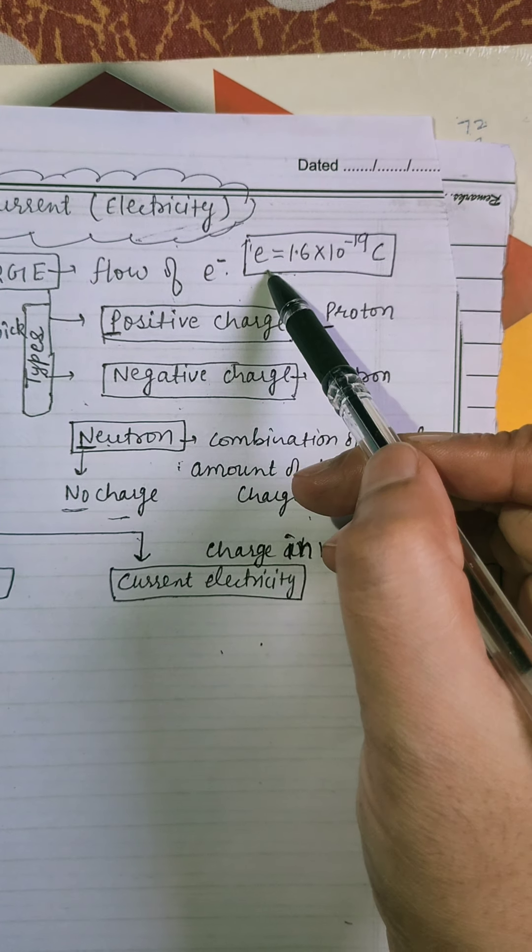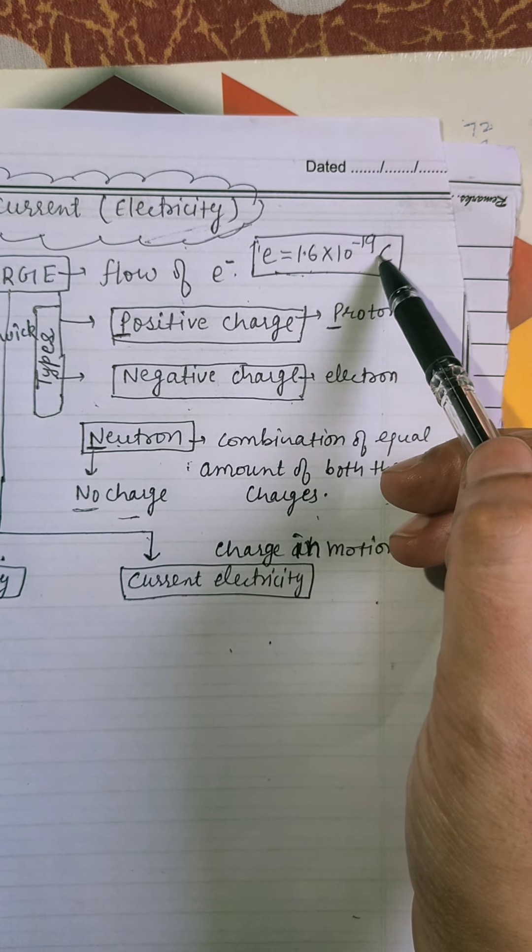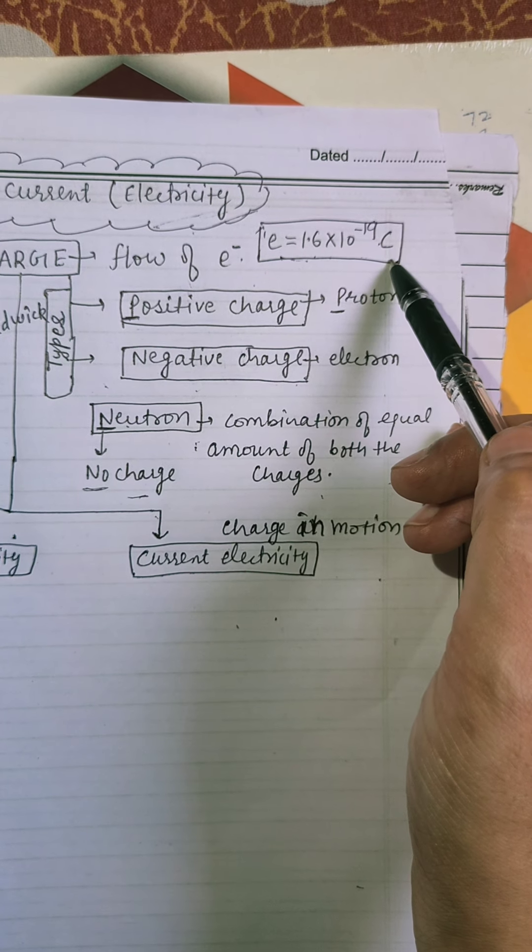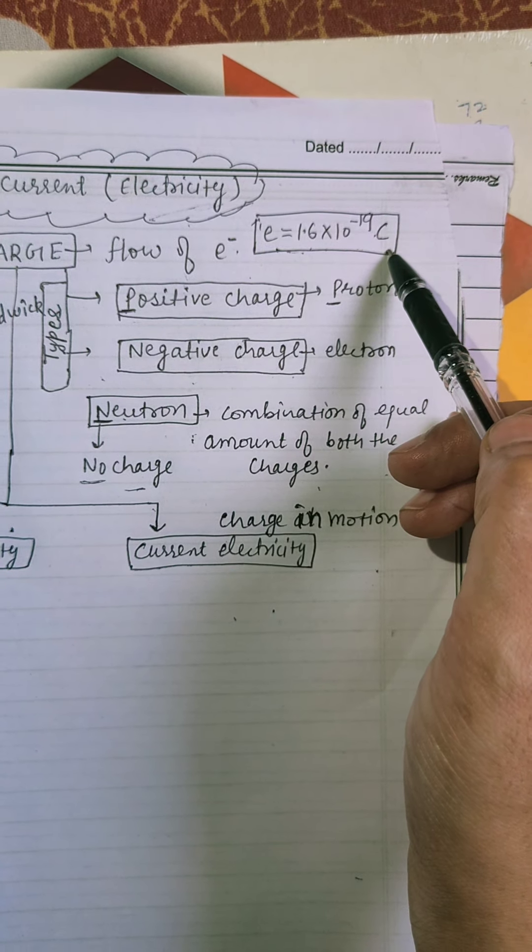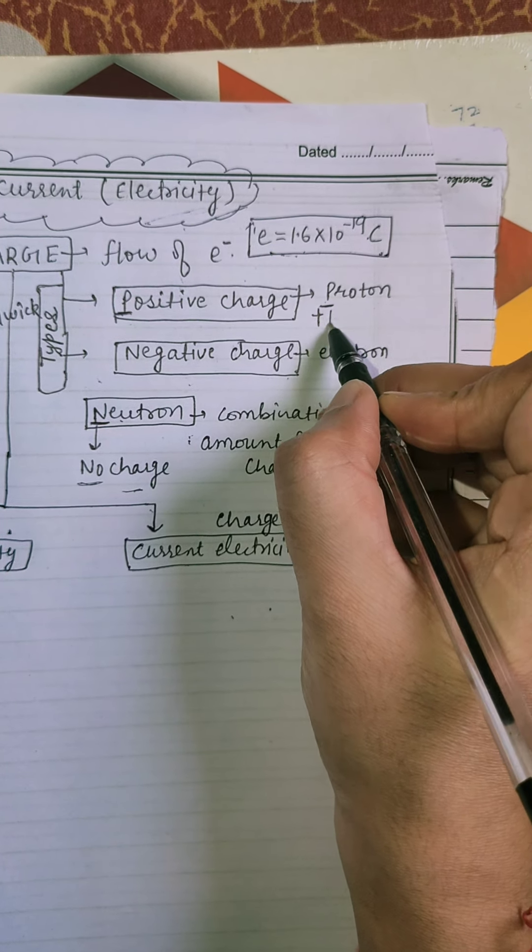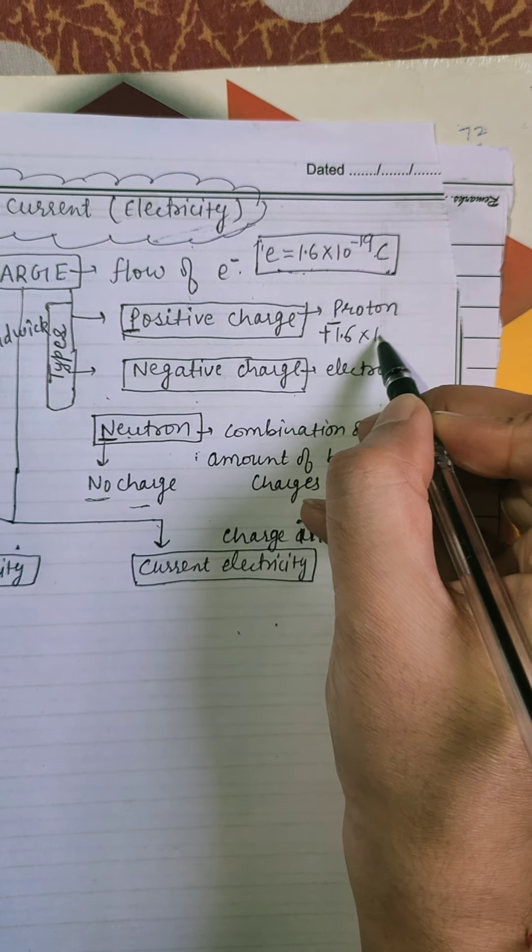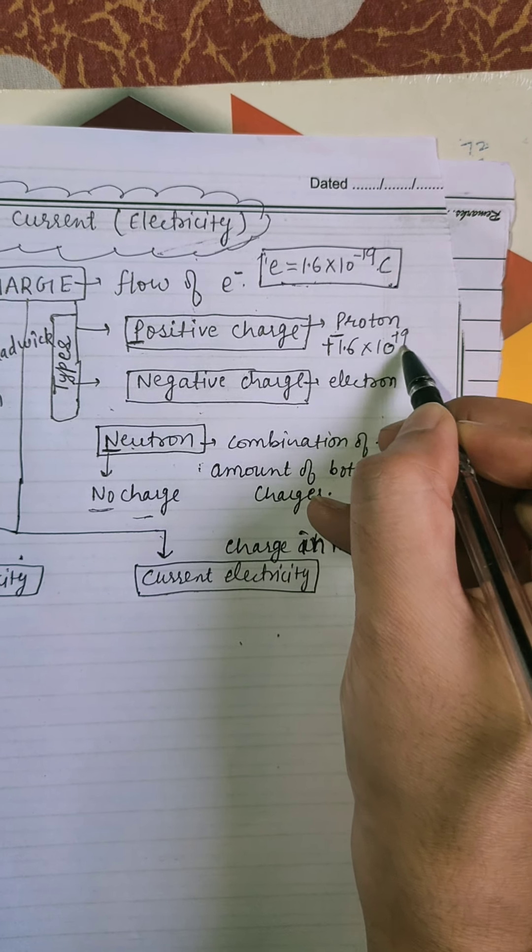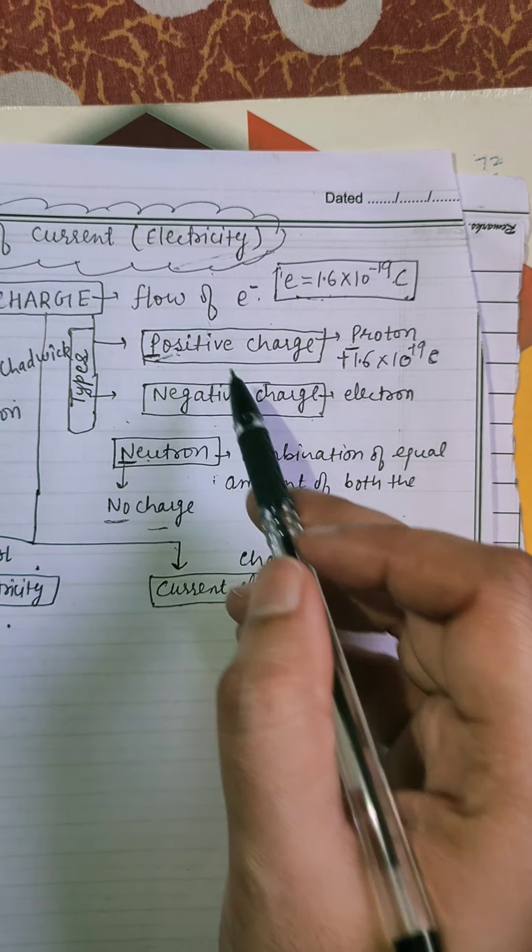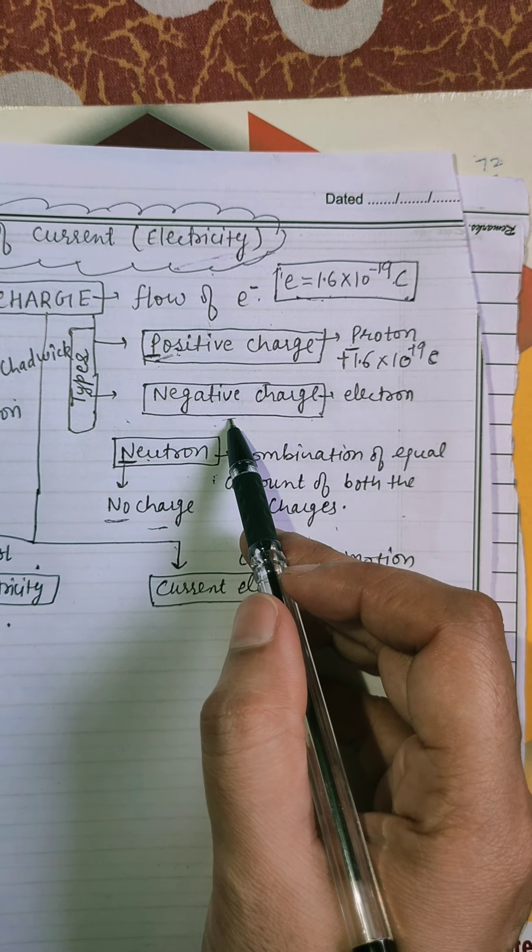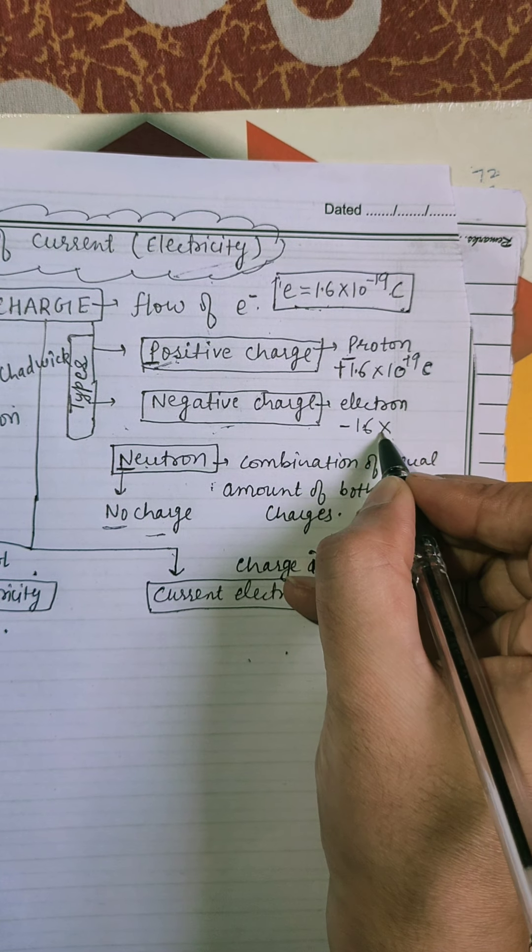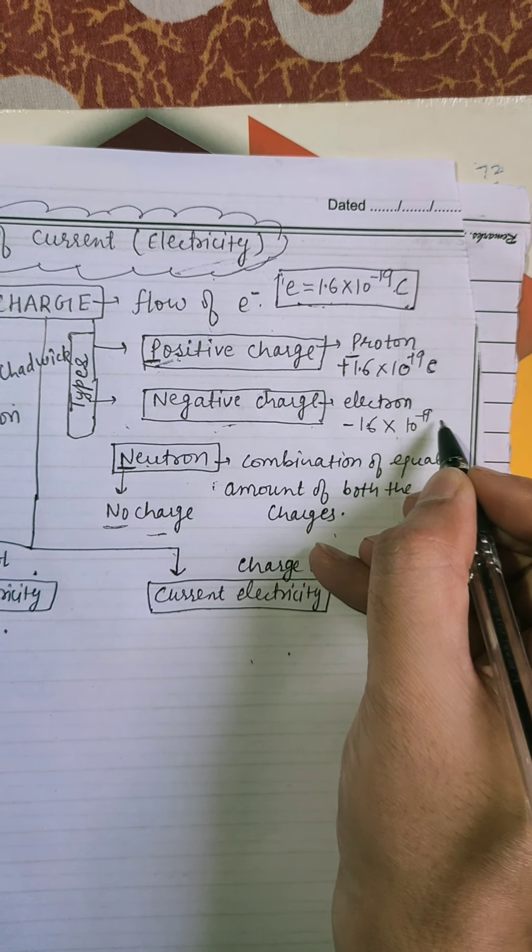Basic value of charges 1.6 into 10 raised to power minus 19 coulomb. And SI unit of charges, coulomb, which is denoted by C. On proton, charges plus 1.6 into 10 raised to power minus 19 coulomb. Because on proton, positive charge present. And in case of electron, negative. So, minus 1.6 into 10 raised to power minus 19 coulomb.